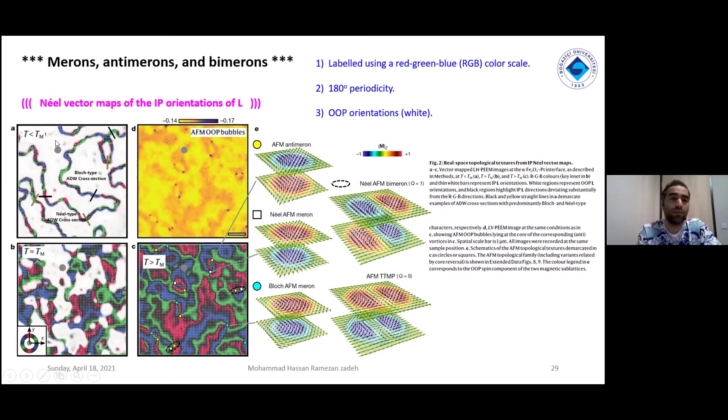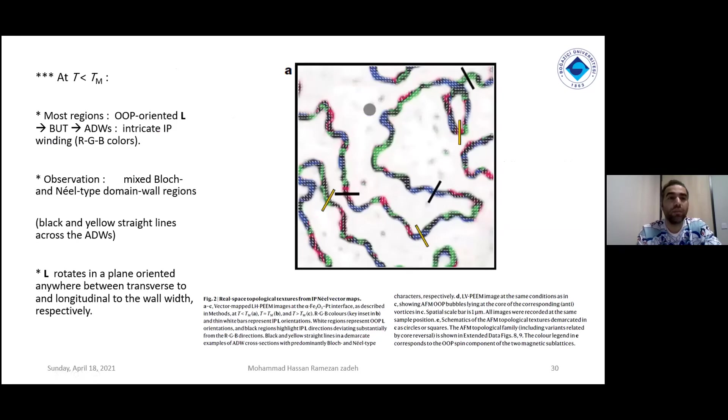For low temperature, you can see they are white, but they are being smaller when temperature is increased. At low temperature what we see, most regions are out-of-plane oriented. But you see here the antiphase domain walls, narrow lines, and we have mixed Bloch and Néel-type domain wall regions. For example, the black ones are Bloch type, and yellow ones are Néel-type domain regions.